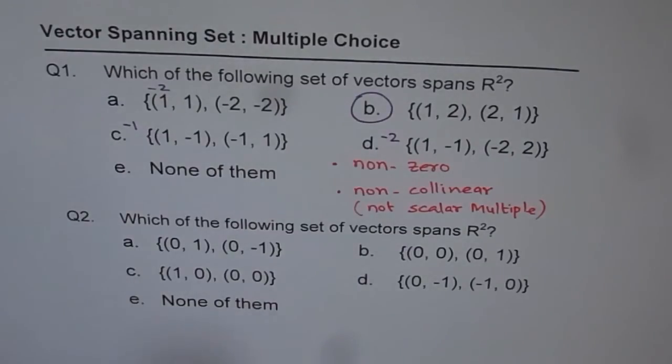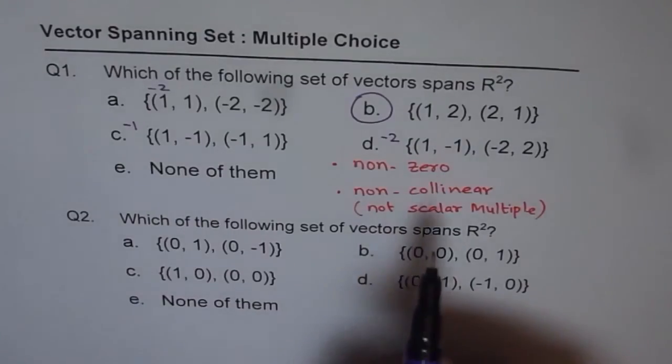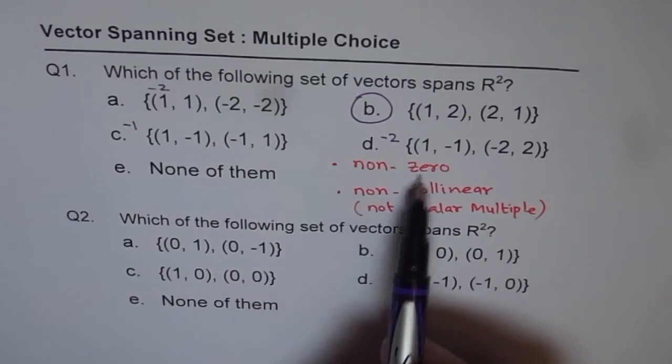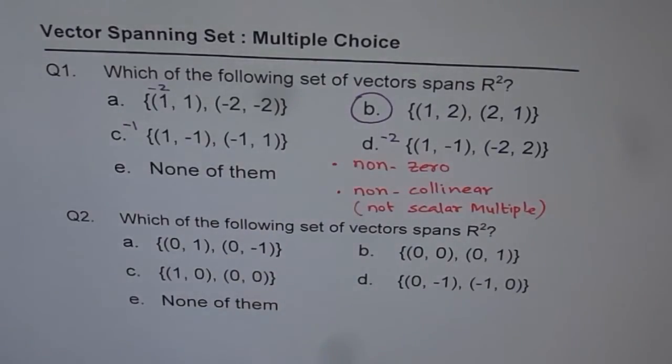Now let's look into question number 2. Which of the following sets of vectors spans R2? Now here we are given a couple of sets and the important thing here is that I have included zero vectors. So we have to be careful. We are looking for non-zero vectors. Only then 2 vectors could form a set that can span in R2.